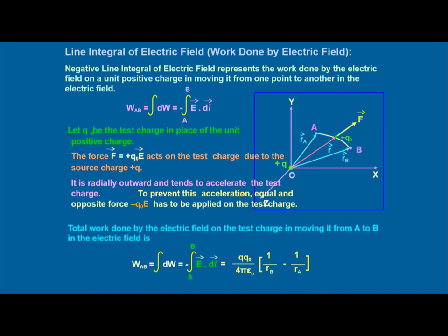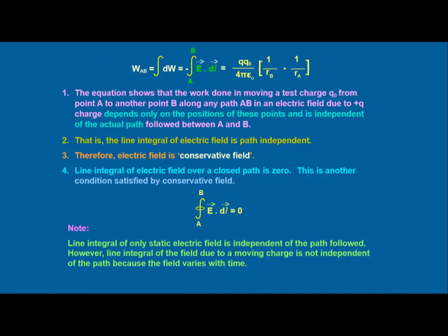This shows that the work done in moving a test charge q_naught from point A to point B along any path in an electric field due to a charge plus Q depends only on the positions of these points and is independent of the actual path followed from A to B. That is, the line integral of the electric field is path independent, which means the work done is conservative — it doesn't depend upon the path, as discussed in 11th class. Therefore, the electric field is a conservative field.